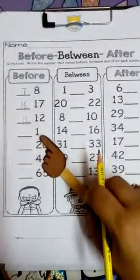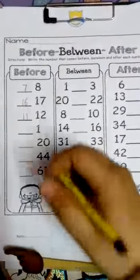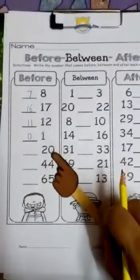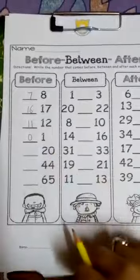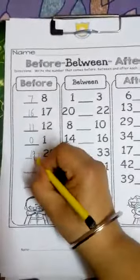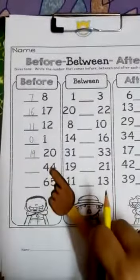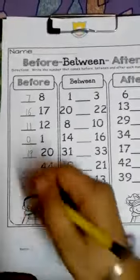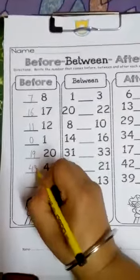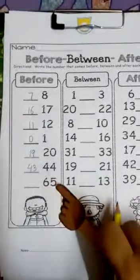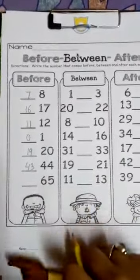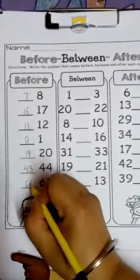What comes before 12? Yes, you write 11. What comes before 1? Yes, you write 0. Okay. What comes before 20? Yes, 19. Well done. What comes before 44? Yes, you write 43. What comes before 65? Yes, you write 64. Okay.